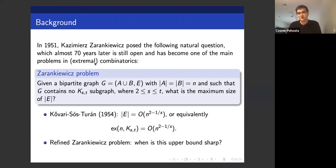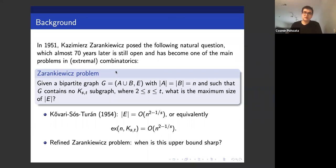The classical result in this area is the theorem of Kővári–Sós–Turán from 1954, which says that this quantity is at most a constant times n^{2 - 1/s}, where s is the smaller of the two parameters. I'll abbreviate this statement using the extremal function notation: ex(K_{s,t}) is at most a constant times n^{2 - 1/s}. This upper bound was already known to be sharp in the case s equals 2 shortly after the theorem appeared.